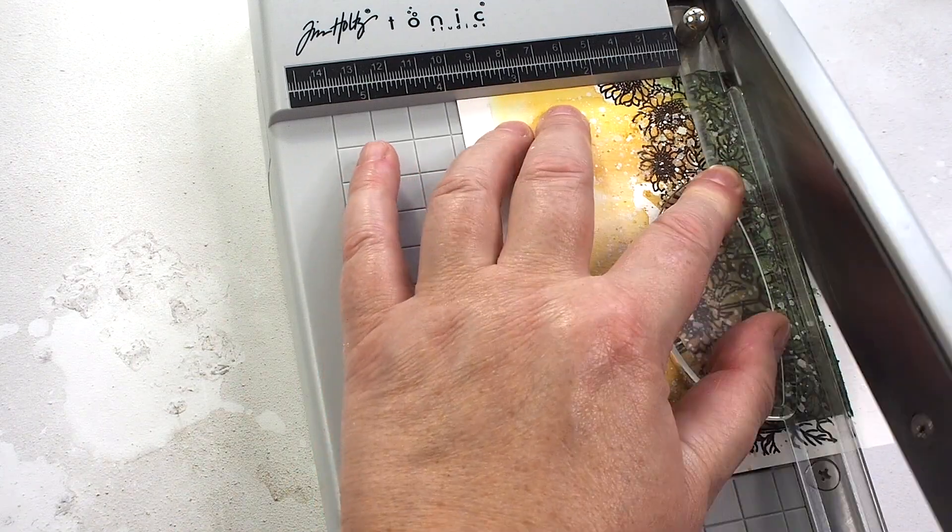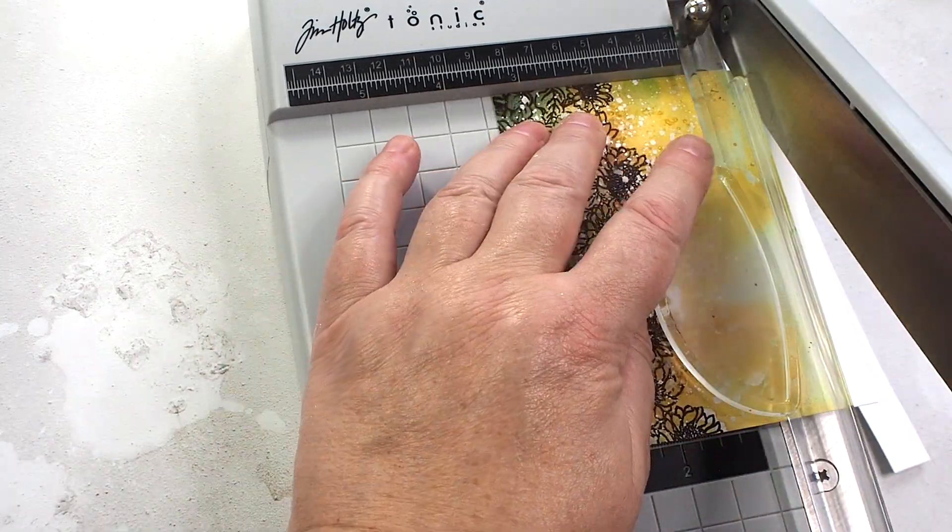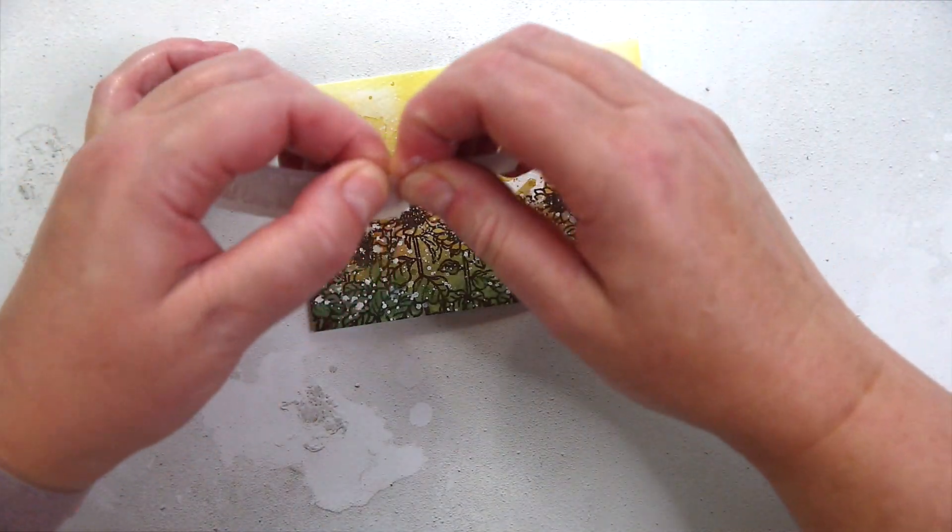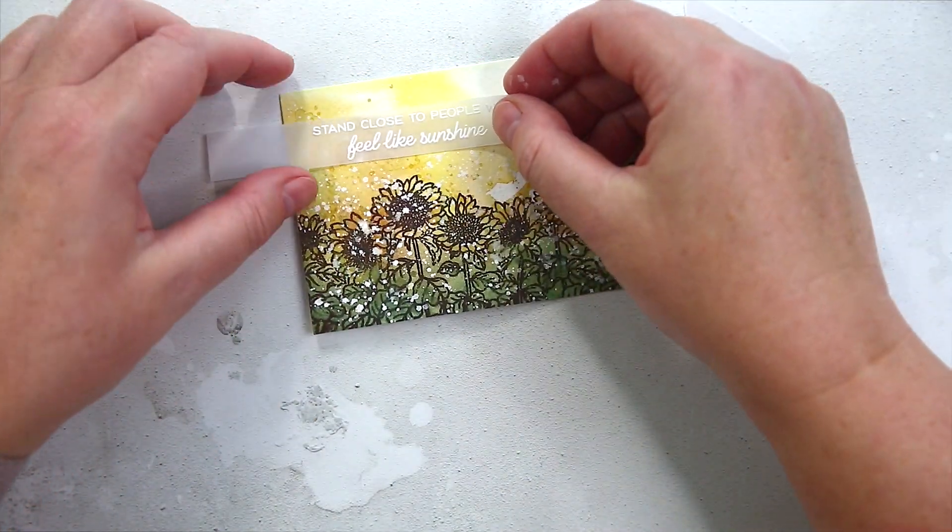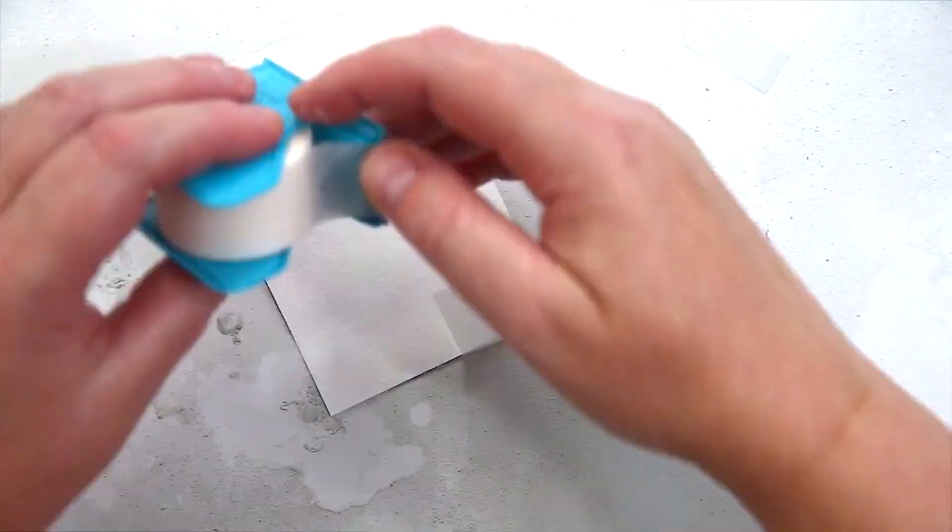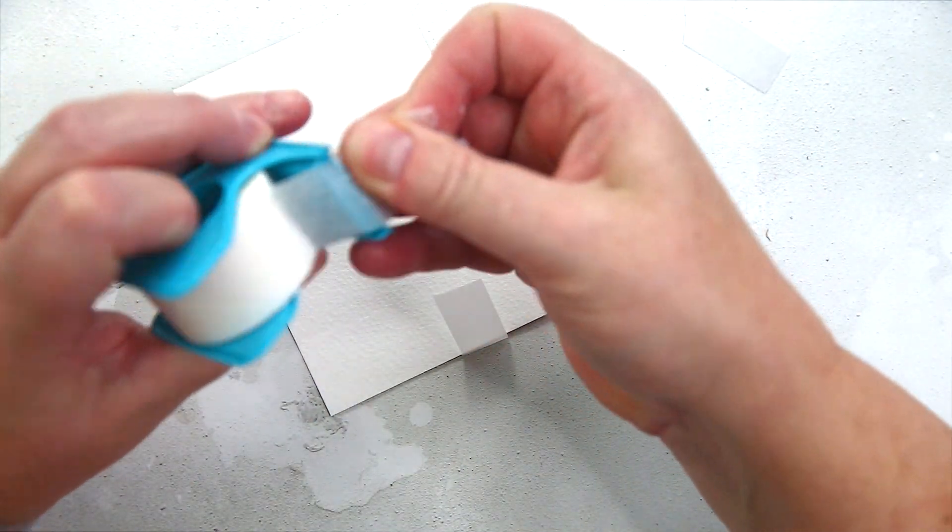At this point, I trimmed the panel down. In the end, I think it was just under three and a half by five inches. I quite like having a torn edge to vellum currently, and so I tore one end of the sentiment strip and then wrapped the other end around the panel and secured on the back with micropore tape.